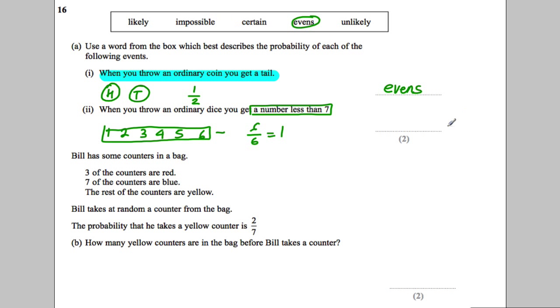Bill has some counters in a bag. Three are red, so let's just draw it: one, two, three red. Seven are blue: one, two, three, four, five, six, seven. The rest are yellow. Bill takes at random a counter from the bag.